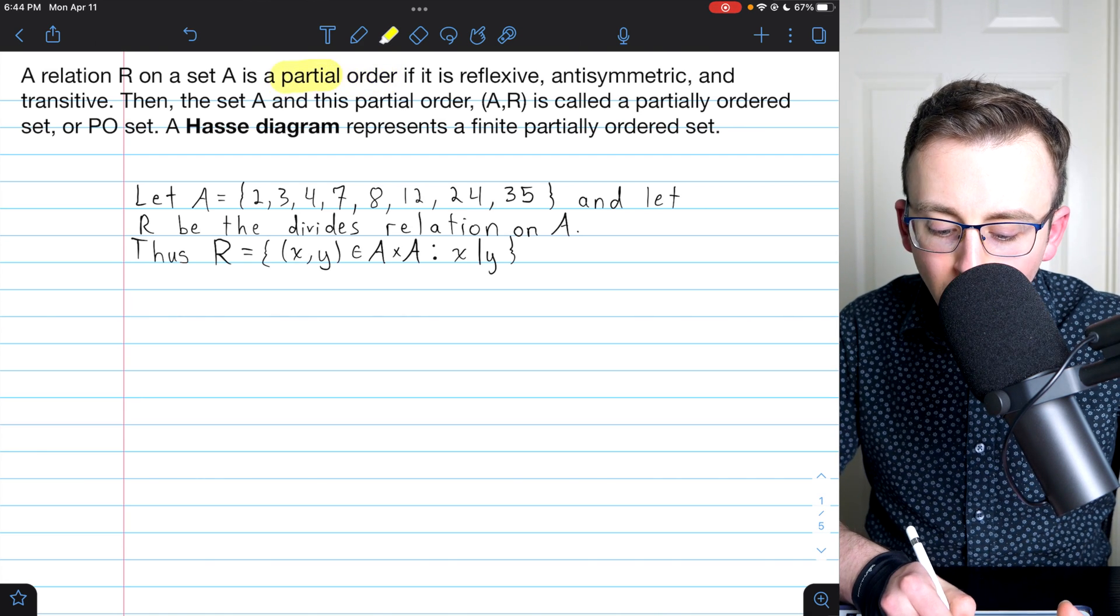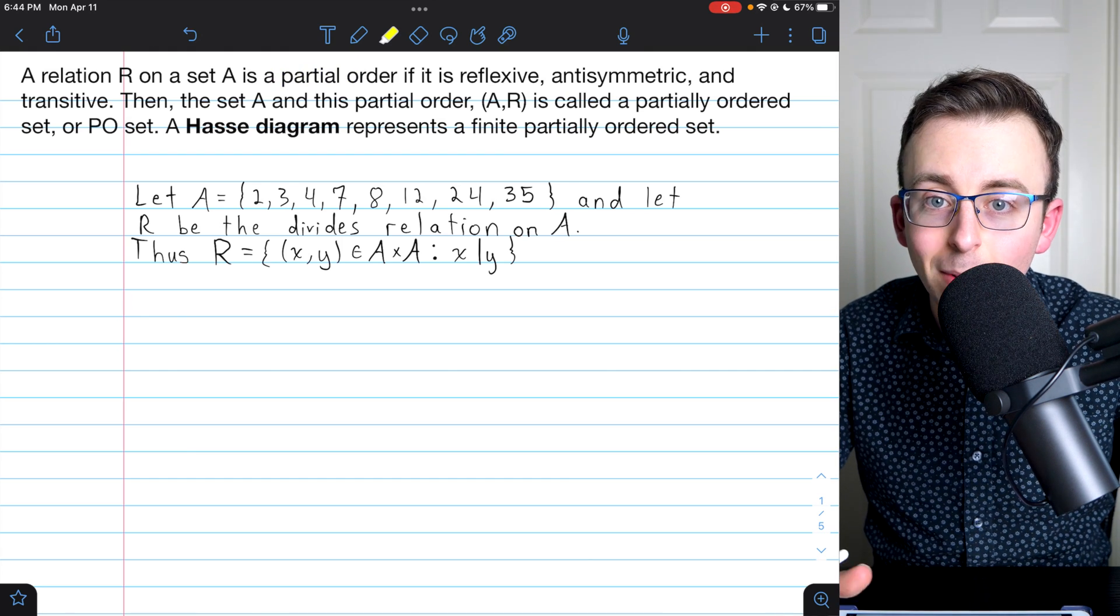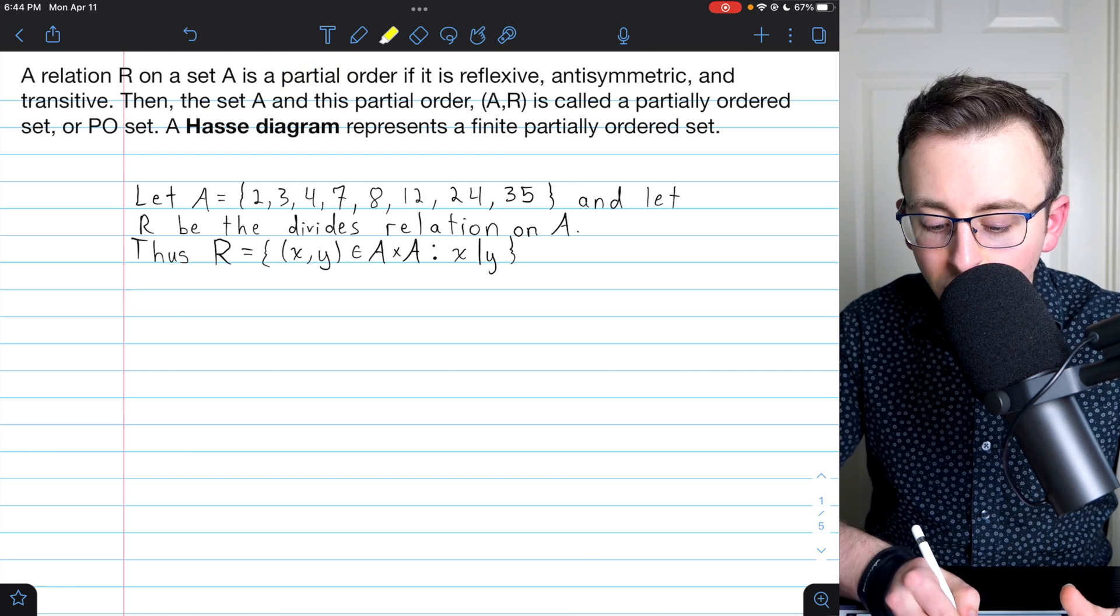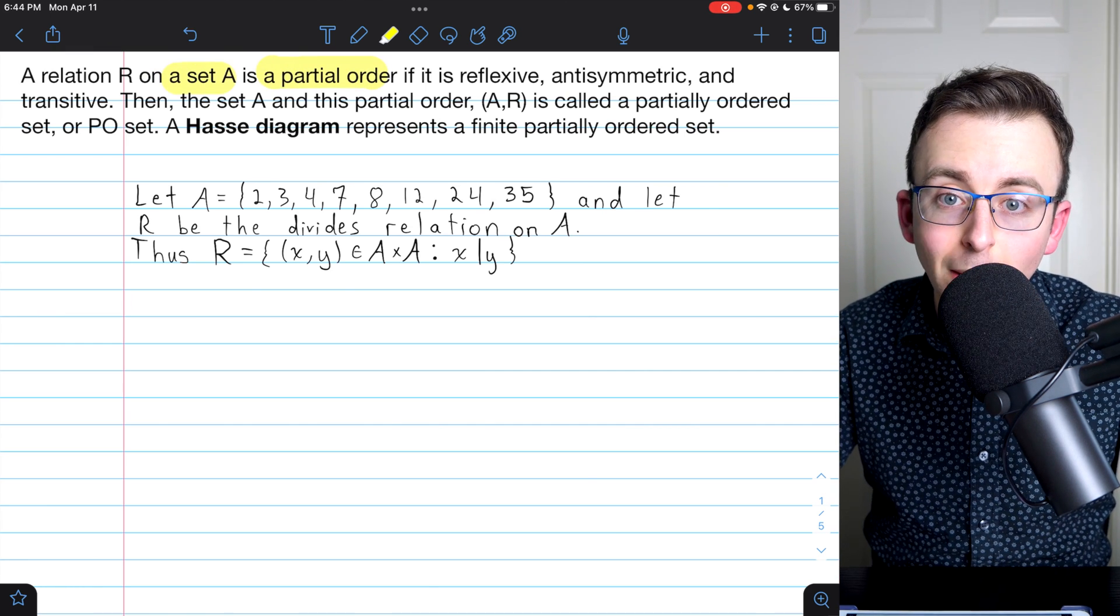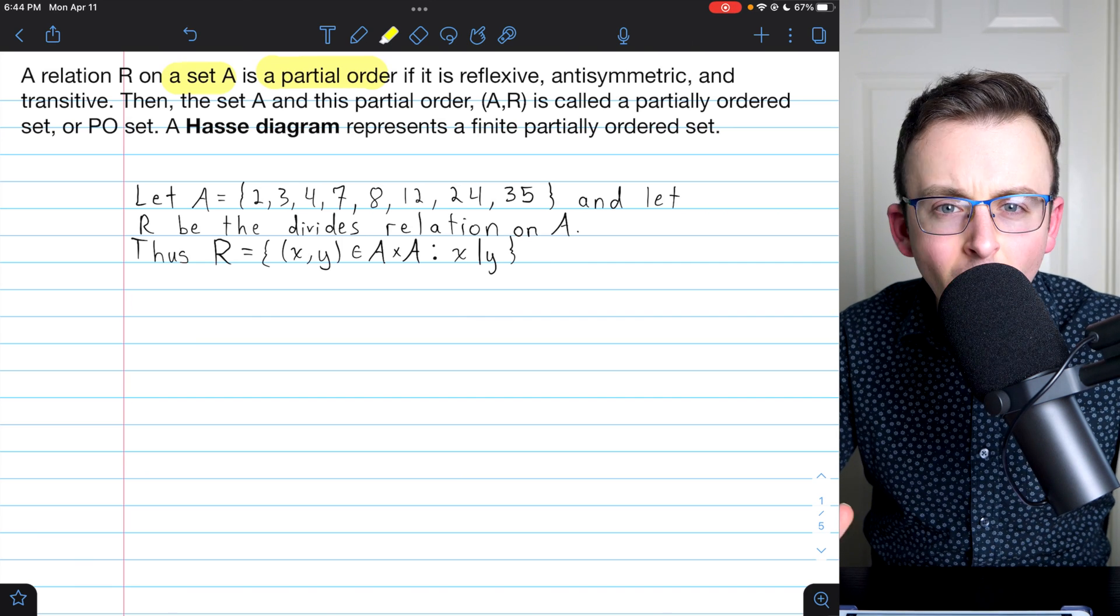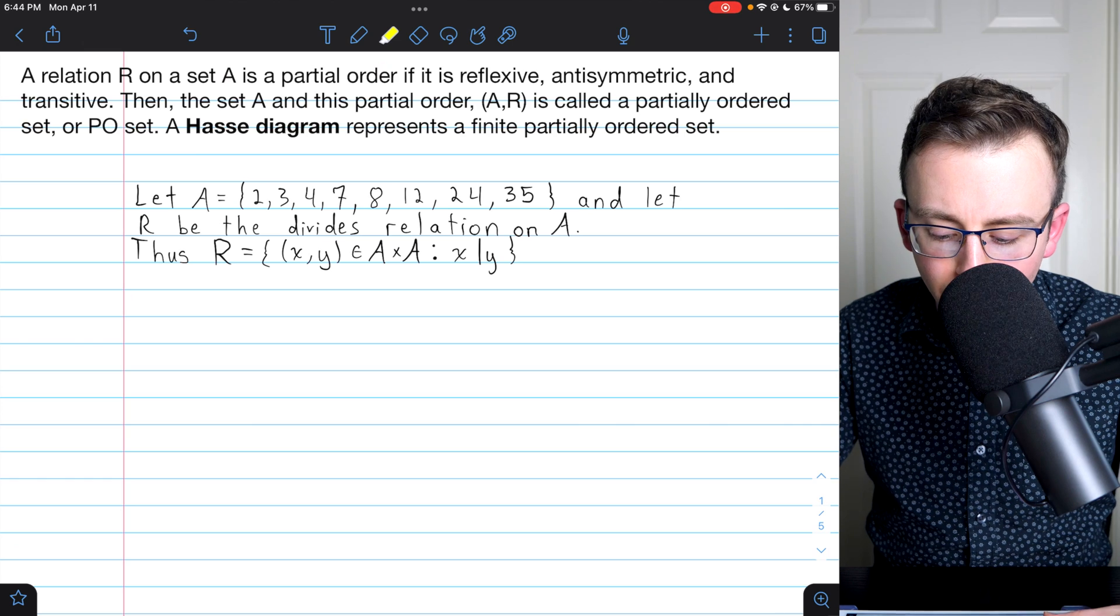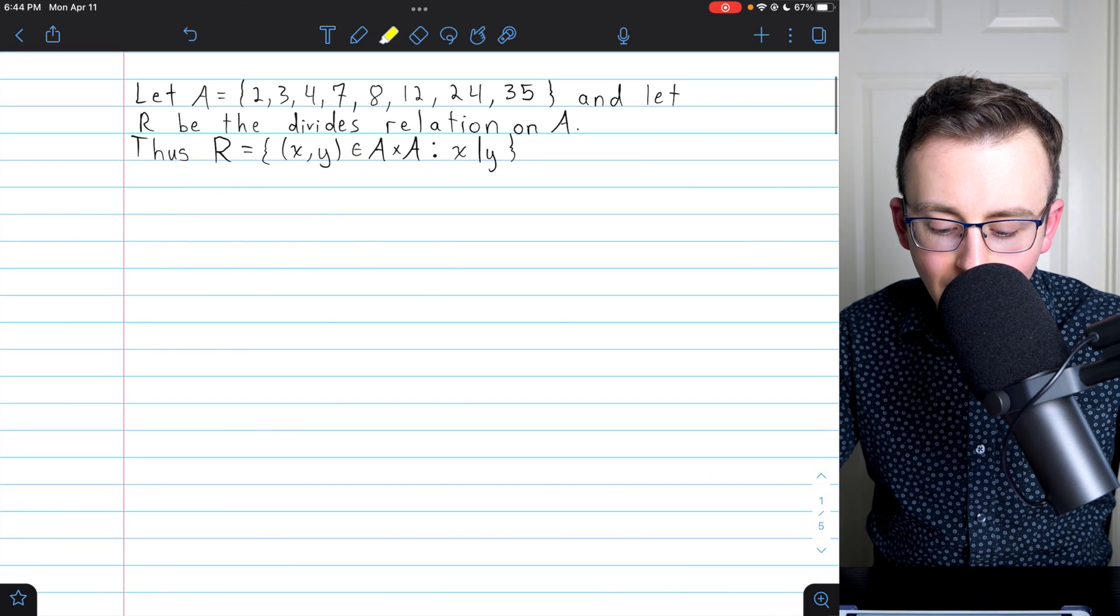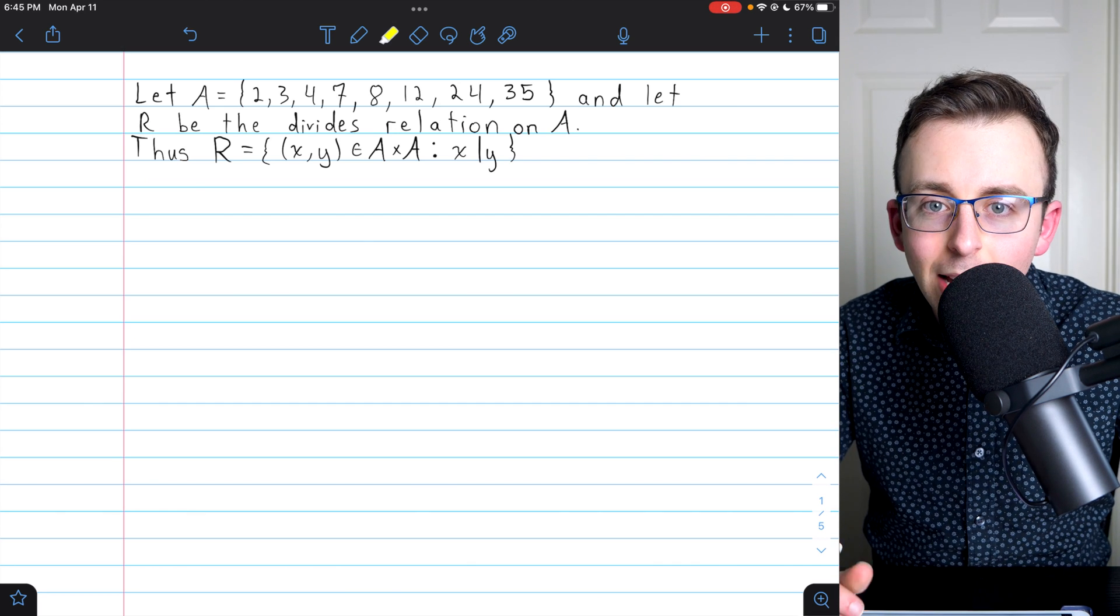This is called a partial order because it's not necessary that every pair of elements relates to each other. So with a partial order on a set, some of the elements have been ordered with respect to each other, but maybe not all of them. So how do we represent this sort of thing, a partially ordered set with a diagram? Let's just start to think about how we might do this.